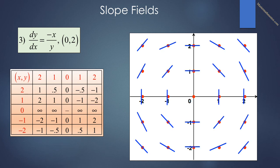Here is the slope field. We can see along the y-axis that the slopes are horizontal. Along the x-axis, the slopes are vertical. In the first quadrant, slopes are negative, and that is also true in the third quadrant. In the second and the fourth quadrants, dy/dx is positive and the slopes go up to the right.